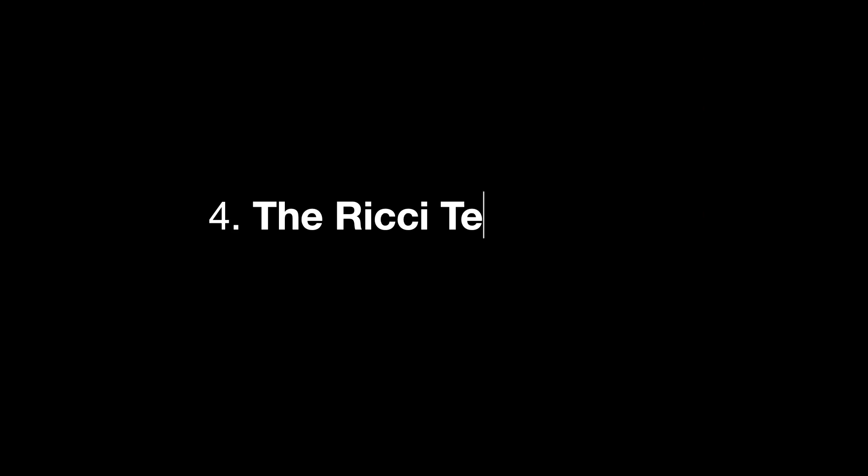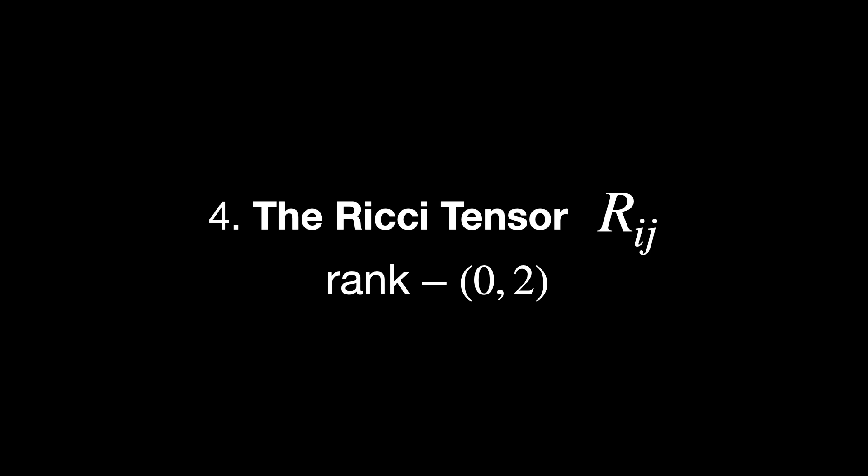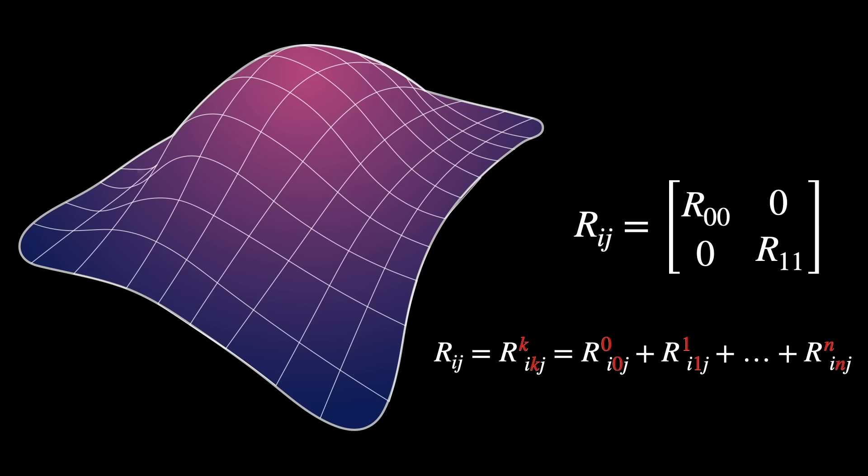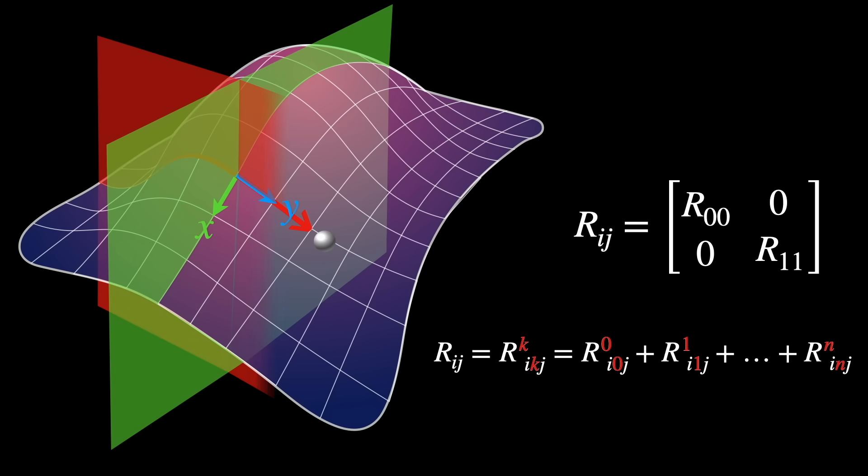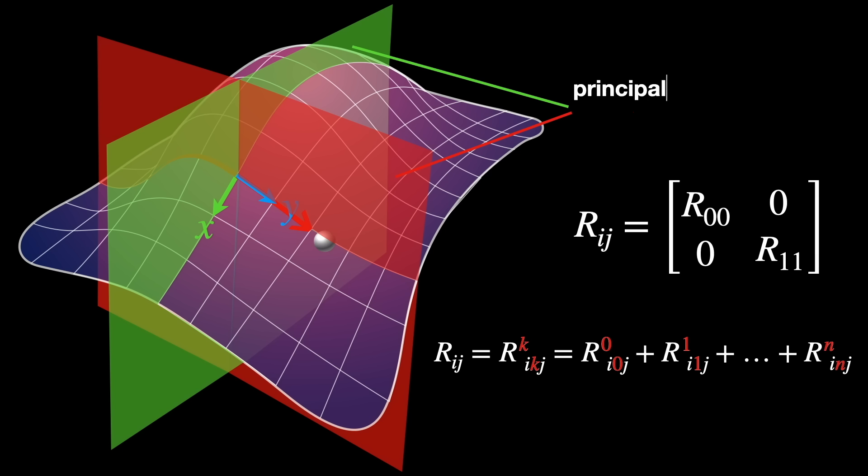The Ricci tensor, Rᵢⱼ. The type is rank (0,2). It's the contraction of the Riemann tensor on the first and third indices. As a consequence, it's purely covariant, and it encodes how volumes distort under curvature.